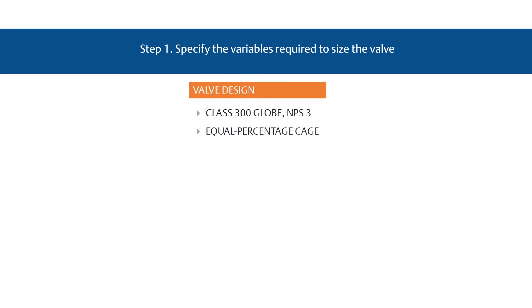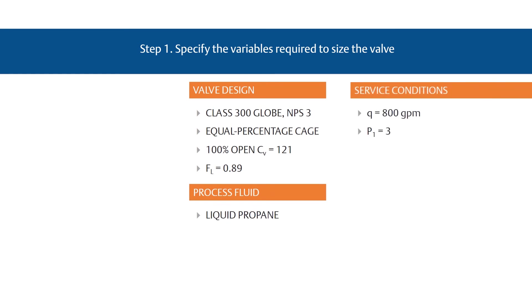We'll assume standard concentric reducers will be used to install the valve into the line. This valve has a 100% open flow coefficient, or CV, of 121 with a liquid pressure recovery factor, or F sub L, of 0.89. The process fluid is liquid propane. And the service conditions are shown. We'll keep these conditions on screen throughout for reference.